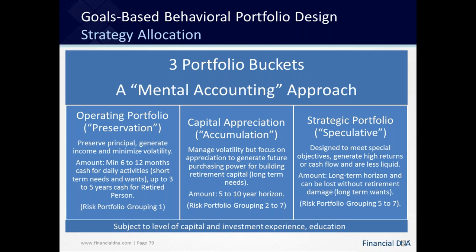The strategic portfolio is used for speculative money to help people meet a special objective, generate high returns, or do something a little different — but the client here can also afford to lose. This really funds long-term wants, not long-term needs, and is generally better for clients with a risk profile grouping of five or more. However, it also depends on how much money they have and their level of investment experience and education. The higher that is, the more liberal you can be in moving the client towards a strategic portfolio. If the client is not investment-educated, the strategic portfolio can become very dangerous because they won't understand what they're investing in, which will ultimately lead to more emotional decision-making.